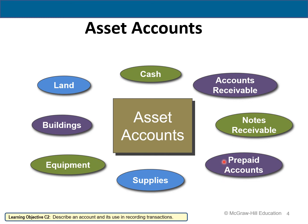Prepaid accounts are anything you pay for up front — the classic example from the business perspective is insurance, which is always prepaid. Supplies are an asset, and as they're used they become supplies expense. Equipment includes things that generally last more than one accounting year, like vehicles, cars, heavy equipment, steam shovels, and bulldozers. Then buildings — which is self-explanatory — and land. It's worth noting that buildings and equipment are subject to depreciation, which is covered in chapter 8 later this term.